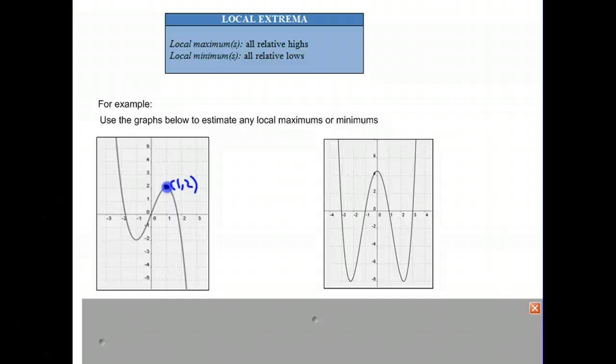It is not an absolute maximum. There is no absolute maximum on this graph, but locally, it certainly is. Since the graph goes up to 1, 2 and then dips down. In the same vein, we could look for a local minimum at negative 1, negative 2.